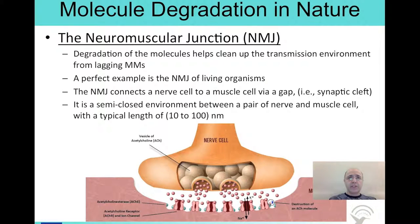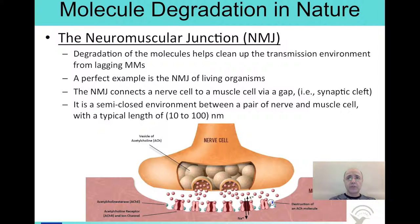One well-known use of degradation in the molecular communication process in nature takes place in the neuromuscular junction. The neuromuscular junction is the gap where the neuron meets the muscle cell. This gap is called the synaptic cleft, which is a closed environment surrounded by the myelin sheath. The nerve cell releases neurotransmitter molecules called acetylcholine. When the acetylcholine molecules bind on the acetylcholine receptors, they cause the ion channel to open, allowing the passage of sodium and potassium ions, as you can see in the figure.